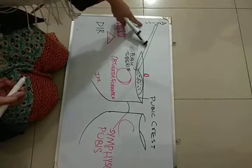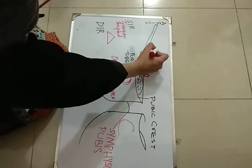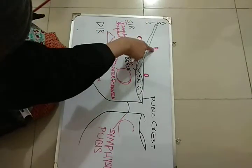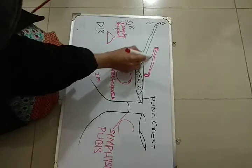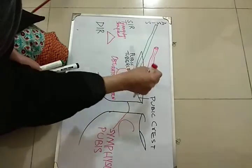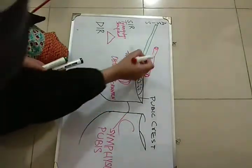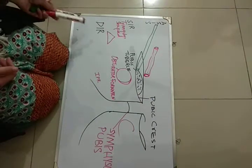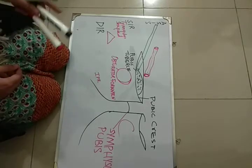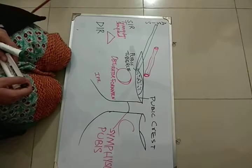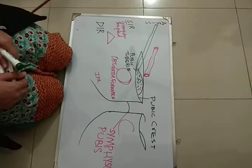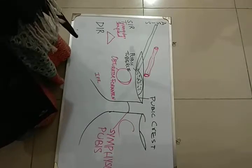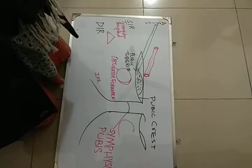The deep inguinal ring is present between the anterior superior iliac spine and the pubic tubercle. This is our inguinal canal — a slit-like passage between the superficial inguinal ring and the deep inguinal ring. The deep inguinal ring allows attachment to the internal spermatic fascia in men and internal fascia of the round ligament of the uterus in females.